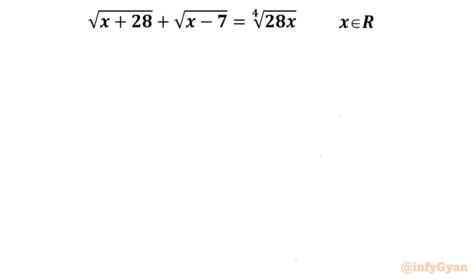To eliminate this 7 and 28, the term which is having 7, let me consider x is equal to 7y or 7t. So equation will become square root 7y plus 28 plus square root 7y minus 7 equal to fourth root of 28 times 7y. Now I will take root 7 outside. So what is left?